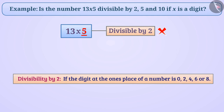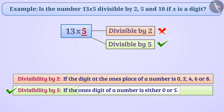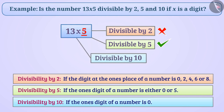Similarly, the divisibility rule for 5 tells us that if the 1's digit of a number is either 0 or 5, then the number is divisible by 5. Since the 1's digit of the given number is 5, this number is divisible by 5. Similarly, the divisibility rule for 10 tells us that if the 1's digit of a number is 0, then that number is divisible by 10. Here, the 1's digit of the number is not 0, so this number is not divisible by 10.